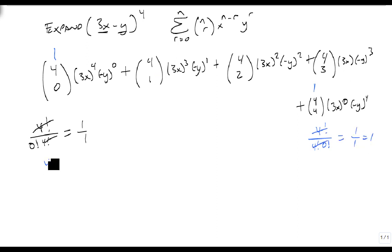4 choose 1 is 4 factorial over 1 factorial times 3 factorial, which is 4 times 3 factorial over 1 times 3 factorial, which is just 4. And 4 choose 3 is going to be the same thing, so I'm going to show this just once, but this splits and is still 4 times 3 factorial over 3 factorial times 1, still gives me 4. So I only have to do one of the n choose r's, and as long as I do the outside and then work in, it works all the way across.